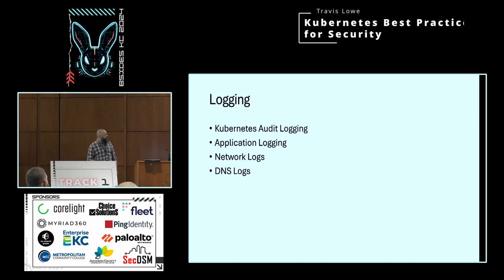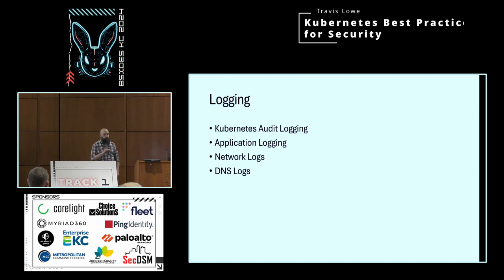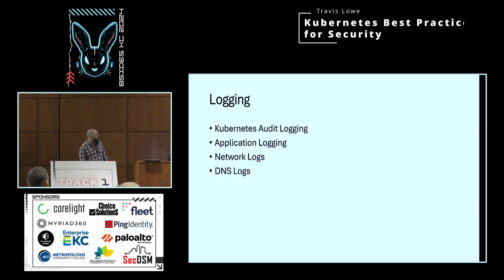Same thing with network logs. In Kubernetes, the networking is virtualized. If you're up in the cloud, you've got layers of virtualization. There is a container network interface, and all of the pods communicate on this virtual network inside the cluster, and that's how traffic flows from one node to the next. When I say node, if you're not familiar, just think VM — it's just an instance type in the cluster. And then DNS logs — who doesn't love DNS logs?